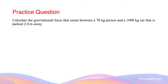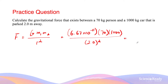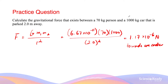Calculate the gravitational force that exists between a 70 kg person and a 1000 kg car parked 2 m away. The gravitational force equals the gravitational constant times the two masses in kilograms divided by the distance apart squared in metres. So: 6.67 × 10⁻¹¹ × 70 × 1000 ÷ 2² ≈ 1.17 × 10⁻⁶ newtons. The direction of the gravitational force is always attractive — towards the car for the person, and towards the person for the car.